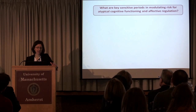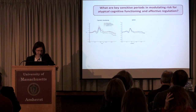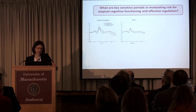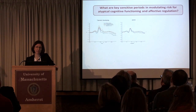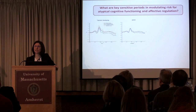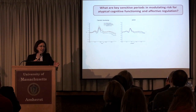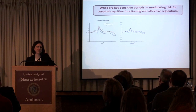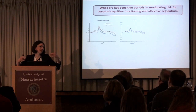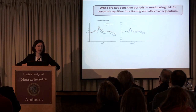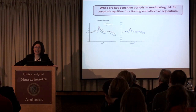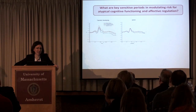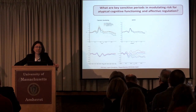We can also ask what are key sensitive periods in modulating risk for atypical cognitive functioning. This is work from my lab with Lisa Harvey. We studied preschool children who have not been diagnosed with ADHD yet but have high symptom rates — the average age of diagnosis doesn't start until elementary school. We tasked them with completing a cognitive measure while frustrating them: 'keep playing this game, the computer's not going to work very well, and try to suppress your emotions as you go through.' We see a lot of neural change in typically developing kids but almost no neural modulation in our ADHD kids.